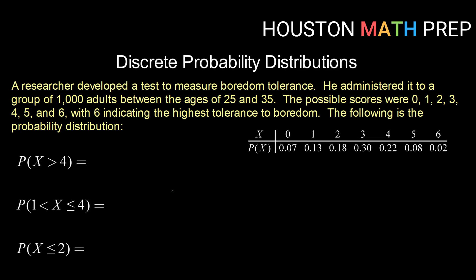A researcher developed a test to measure boredom tolerance. He administered it to a group of 1,000 adults between the ages of 25 and 35. The possible scores were 0, 1, 2, 3, 4, 5, and 6. So definitely discrete there,